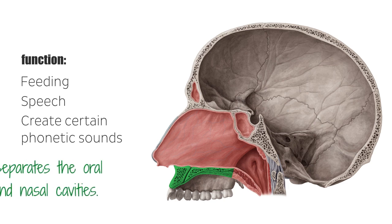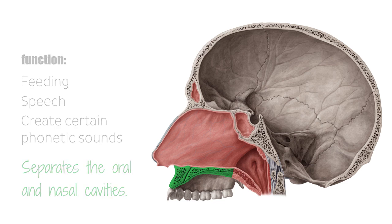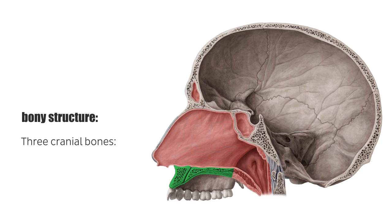The hard palate separates the oral and nasal cavities, bordering the oral cavity superiorly and forming the roof of the mouth and the nasal cavity inferiorly, which defines its floor. The bony structure of the hard palate is comprised of three cranial bones: the maxilla and the paired palatine bones.